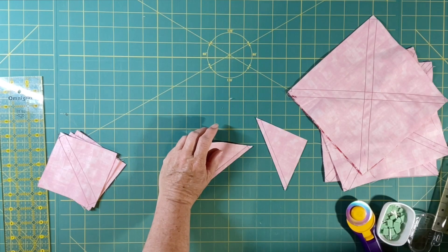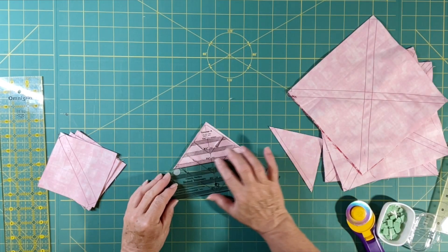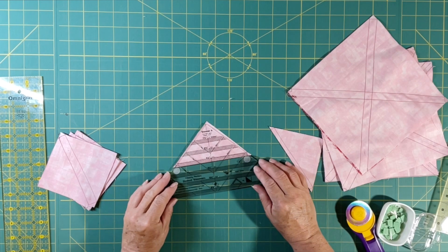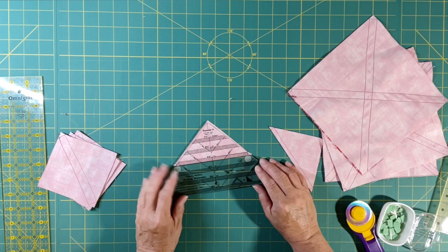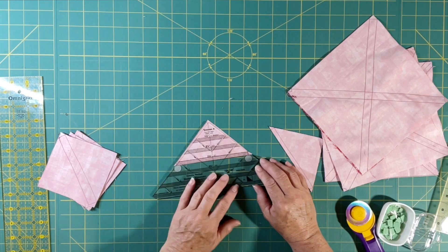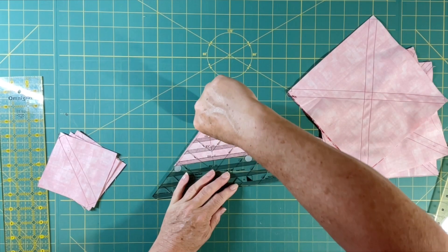So here's two, there's my half square triangle. But I use the clearly perfect slotted rulers for this and I would put my three and a half inch line on here and then trim them before I actually open them up. And I have another video on this that I will put up here on the upper right hand corner.